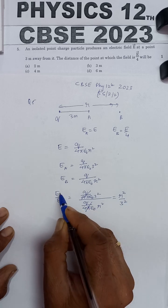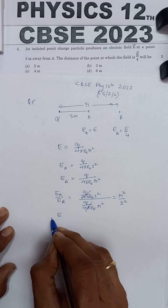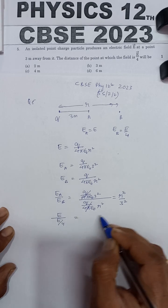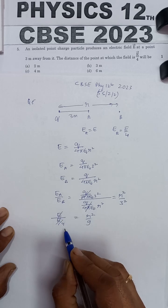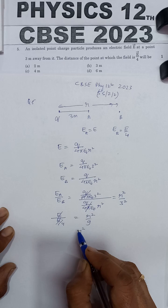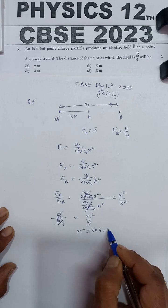Now EA is given as E and EB's value is E/4. This is r² and this is 9. Then E and E cancel, then 4 will transfer. So r² will be equal to 9 times 4, which will be equal to 36.